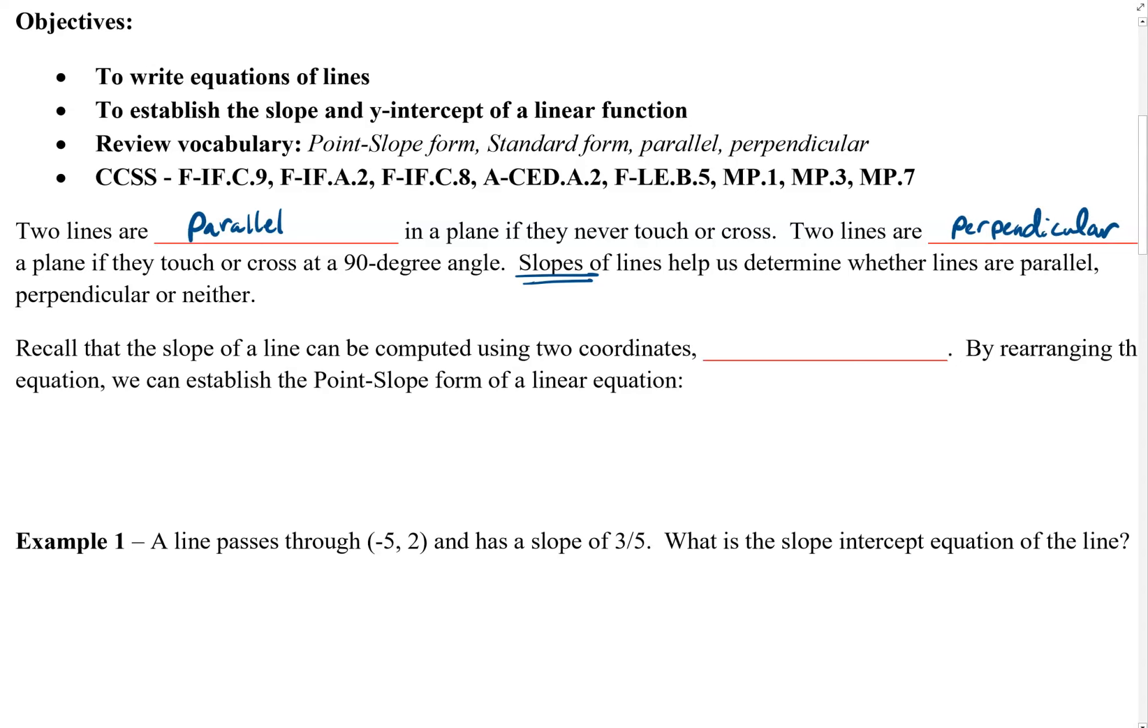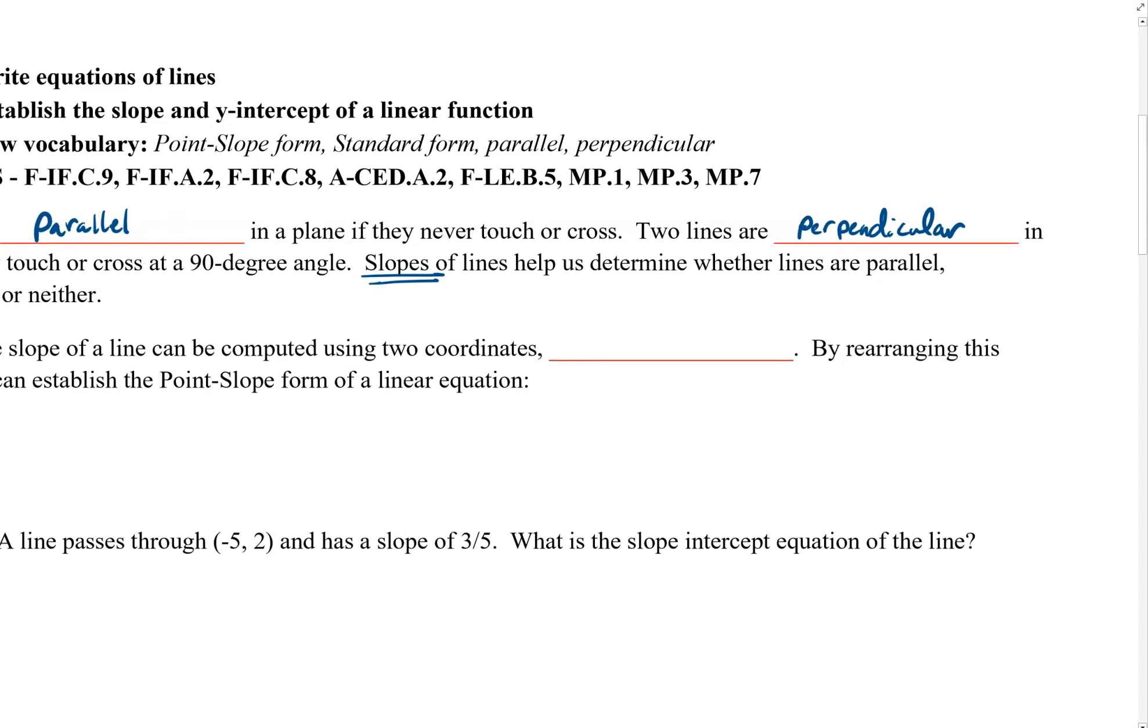So, if you recall, the slope of a line can be computed using two coordinates and this formula. Slope m is equal to the y value of the second coordinate minus the y value of the first, divided by the x value of the second coordinate minus the x value of the first. We call this the difference in y's divided by the difference in x's.